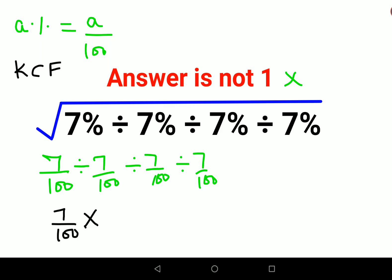When you do that, you have to flip the next number. So this comes out to be 100 upon 7. This also comes out to be 100 upon 7. This also comes out to be 100 upon 7.